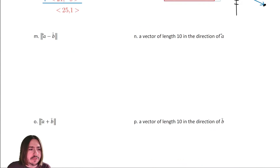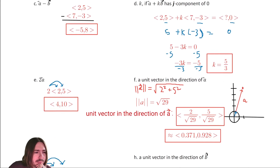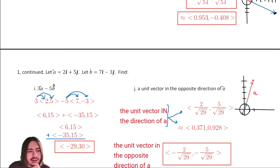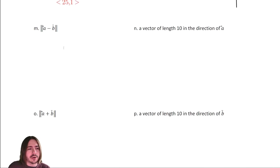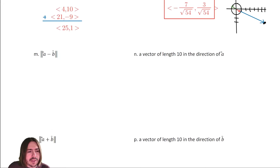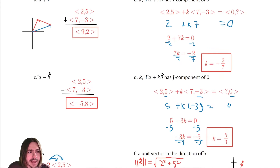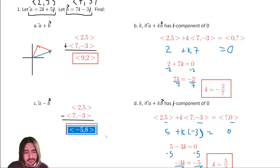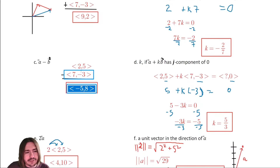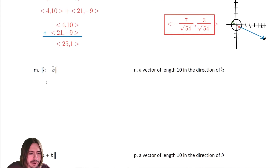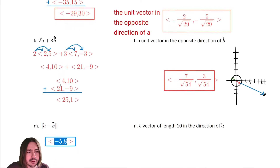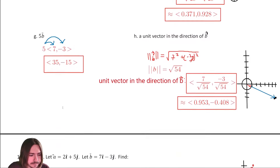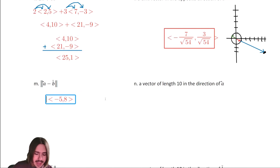Letter M asks for the magnitude of the difference of the vectors. We already calculated the difference back in problem 1C — it was negative five comma eight. We're going to use that result. Finding the magnitude using the Pythagorean theorem: square root of negative five squared plus eight squared.